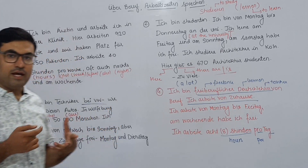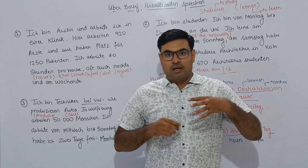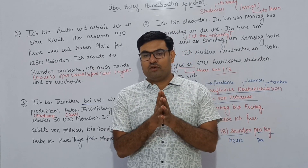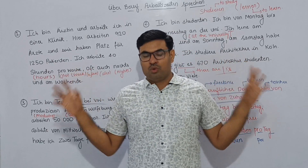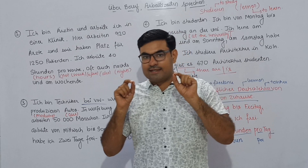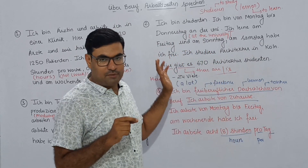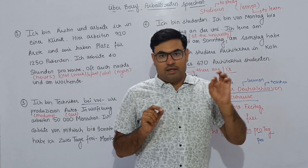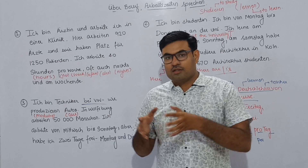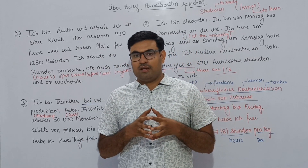Reading together: 'Ich bin freiberuflicher Deutschlehrer. Von Beruf ich arbeite von Zuhause. Ich arbeite von Montag bis Freitag. Am Wochenende habe ich frei. Ich arbeite 8 Stunden pro Tag.' So: I am a freelance German teacher, I work from home, I work Monday to Friday, on weekends I have free time, and I work 8 hours per day.